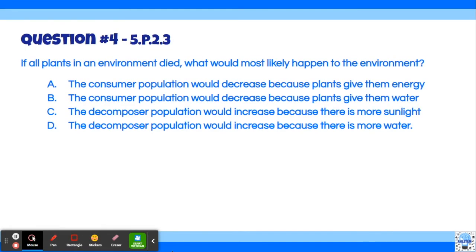Question number four, if all plants in an environment died, what would most likely happen to the environment? A, the consumer population would decrease because plants give them energy. B, the consumer population would decrease because plants give them water. C, the decomposer population would increase because there's more sunlight. D, the decomposer population would increase because there's more water.